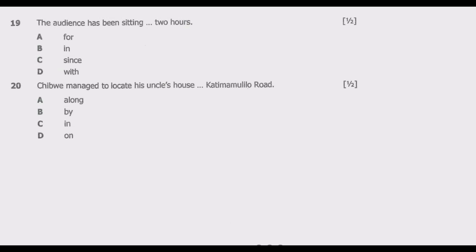Question nineteen: 'The audience has been sitting ___ two hours.' Options: A: for, B: in, C: since, D: with. The correct answer is A — 'for.' It reads: 'The audience has been sitting for two hours.' The preposition 'for' is mostly used to indicate a duration of time. Hence A is the correct answer.